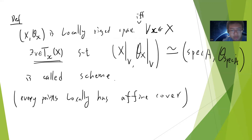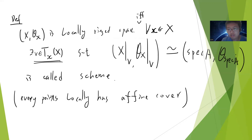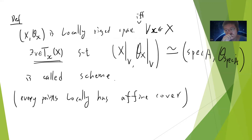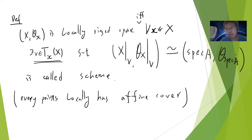Simply speaking, every point locally has an affine cover — basically every part of the space looks like a small open set which comes from some ring. So you start from some commutative ring with identity, take the affine scheme, and it becomes a general scheme.